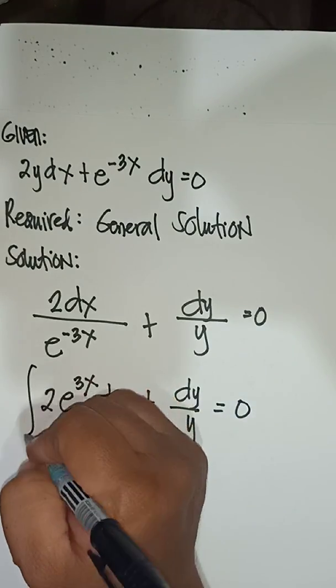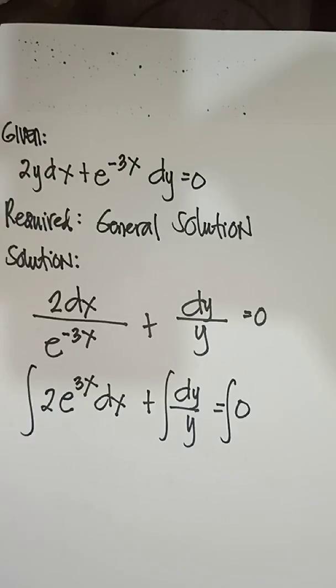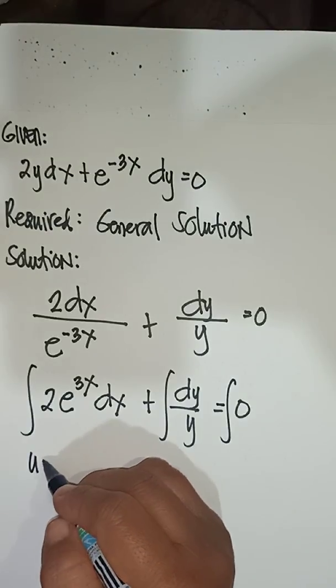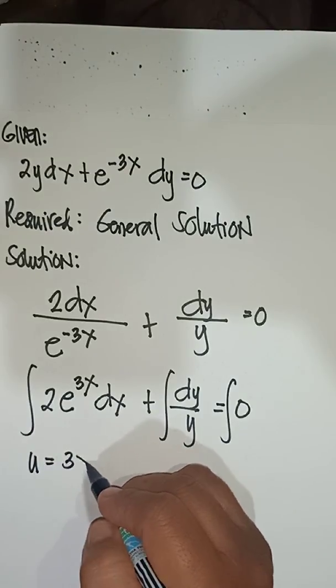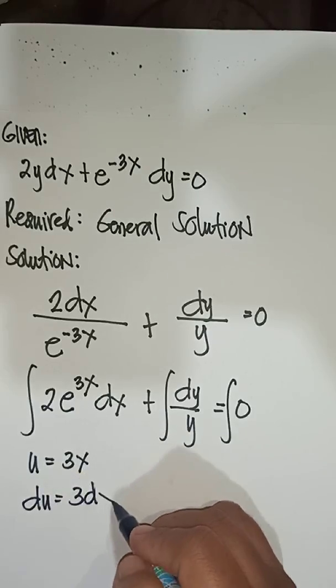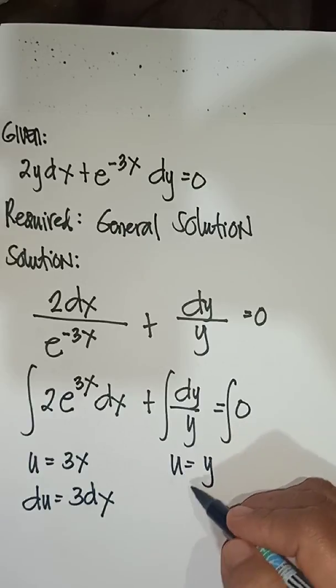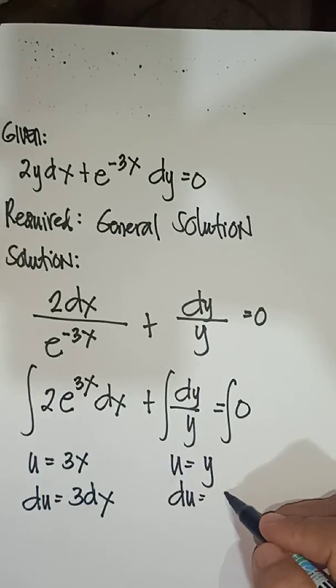Then, after that, find the integration. So, u equals 3x, du equals 3dx. Here, u equals y, du equals dy.